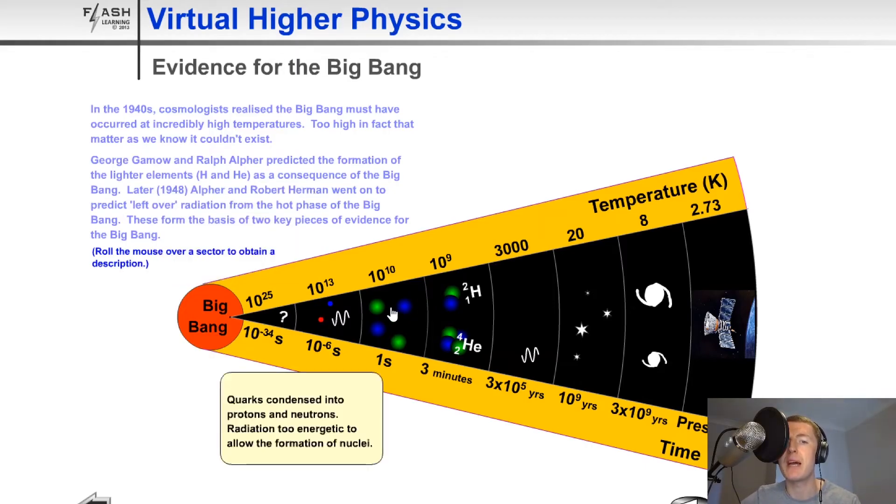And then about 1 second after the Big Bang, the quarks condensed into protons and neutrons. Radiation was too energetic to allow the formation of nuclei.